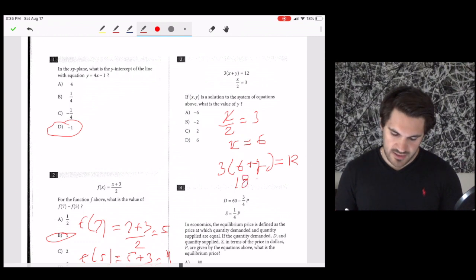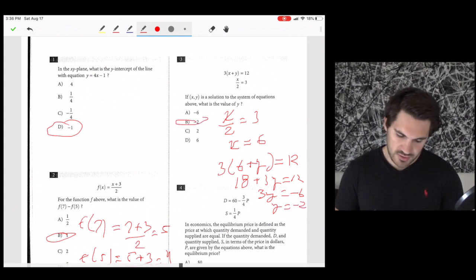y equals 12. Distribute this out. 18 plus 3y equals 12. 3y equals negative 6. y equals negative 2. Our answer is b.